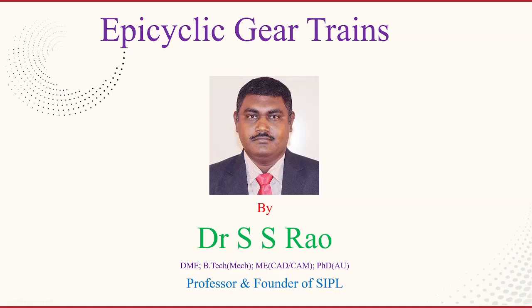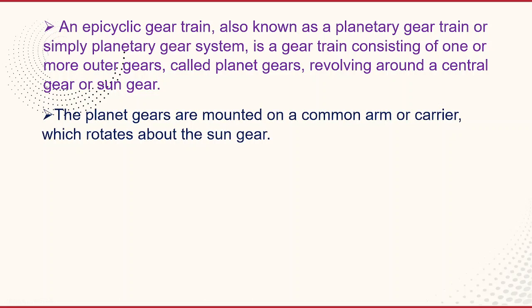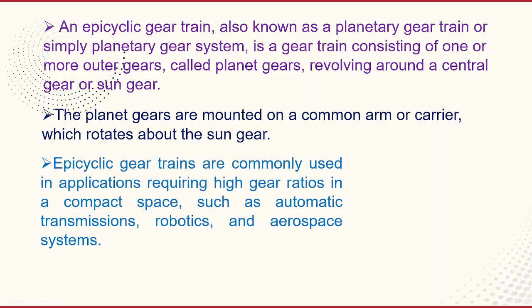In this video, I am going to explain epicyclic gear trains. An epicyclic gear train, also known as a planetary gear train or simply planetary gear system, is a gear train consisting of one or more outer gears called planet gears revolving around a central gear or sun gear. Planet gears are mounted on a common arm or carrier which rotates around the sun gear. Epicyclic gear trains are commonly used in applications requiring higher gear ratios in a compact space, such as automatic transmissions, robotics, and aerospace systems.